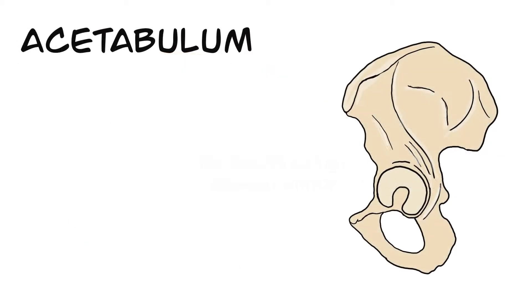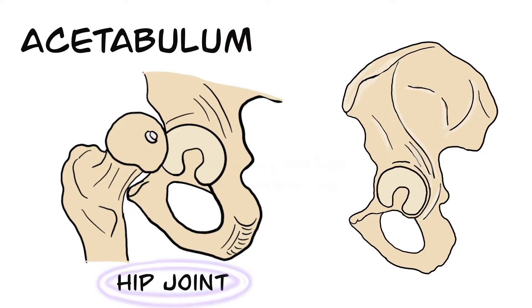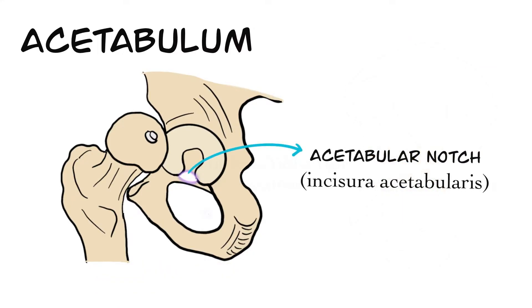Acetabulum, which means vinegar cup in Latin, is a cup-shaped cavity on the lateral aspect of the hip joint. It is like a socket and articulates with the femoral head to form the hip joint. The margin of acetabulum is interrupted by acetabular notch at the inframedial aspect. In here there is no socket, which is very important biomechanically.